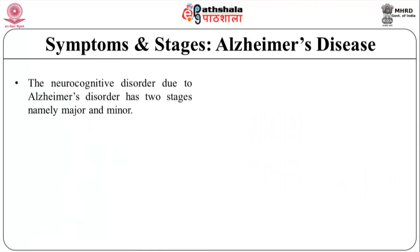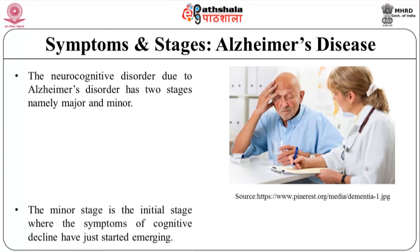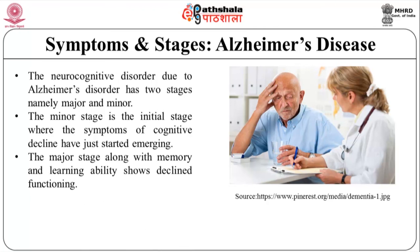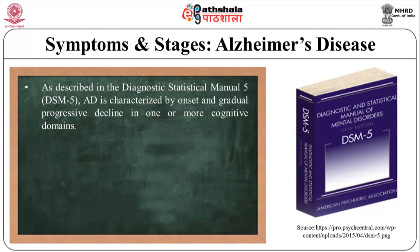The neurocognitive disorder due to Alzheimer's has two stages, namely major and minor. The minor stage is the initial stage where the symptoms of cognitive decline have just started emerging. In the major stage, along with memory and learning ability, at least one other cognitive domain shows decline in functioning. As described in the Diagnostic and Statistical Manual 5, Alzheimer's disease is characterized by onset and gradual progressive decline in one or more cognitive domains.